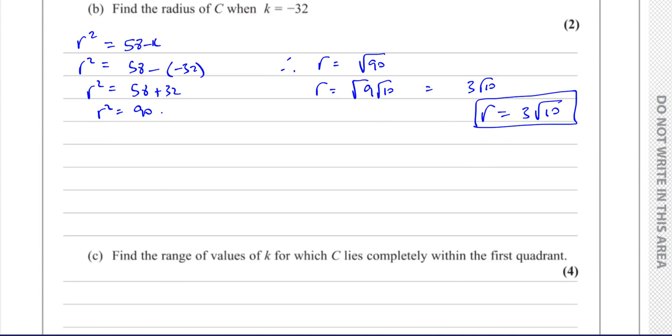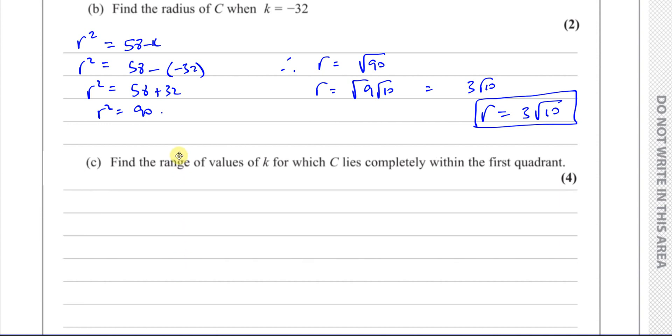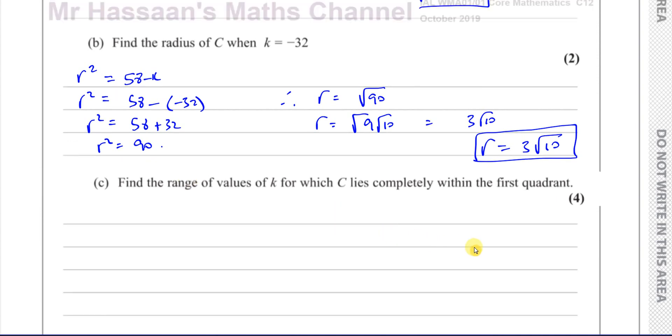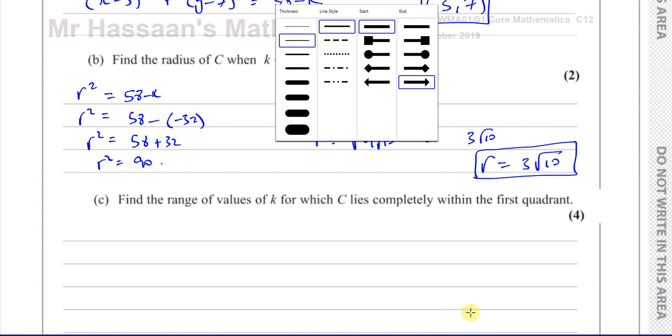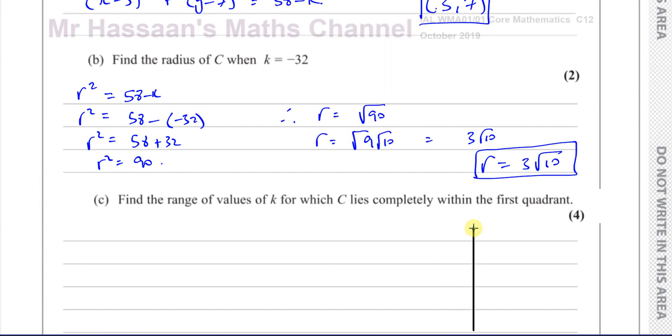Now for part C: Find the range of values of k for which C lies completely within the first quadrant. I'm going to make a little sketch to picture what's happening. We've got our y-axis and x-axis. The center of the circle is (3, 7), let's say it's up here somewhere.